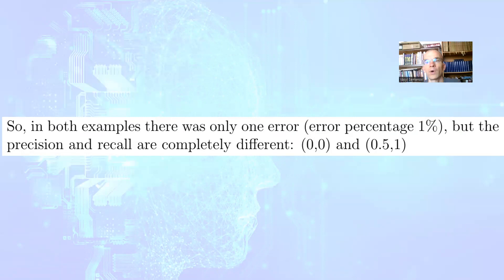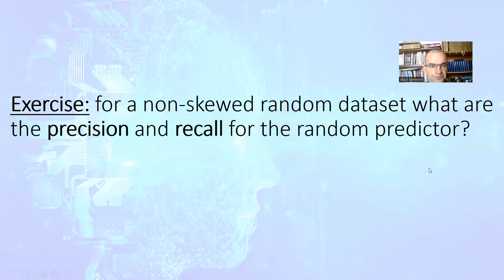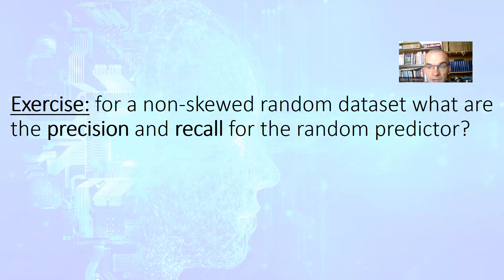We must be very careful while assessing the effectiveness of a classification algorithm. As a homework question: for a non-skewed random dataset, what are the precision and recall for a random predictor — when we randomly classify the data as 0 and 1 and our dataset also consists of random 0s and 1s?